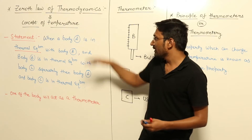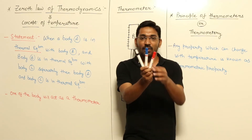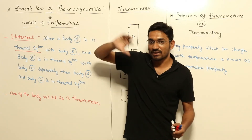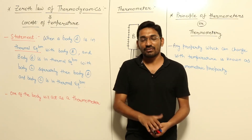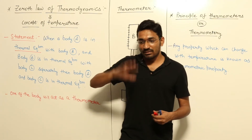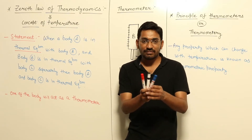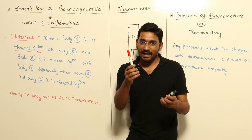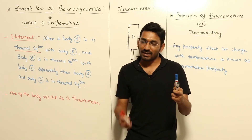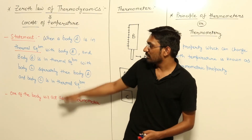With the help of the Zeroth Law of thermodynamics, we are able to determine that out of these three bodies, one body will act as a thermometer. That's why the Zeroth Law of thermodynamics is used to make thermometers - the concept of how a thermometer works comes from this law. A thermometer works on the Zeroth Law of thermodynamics. So if body A and body B are in thermal equilibrium, and body B and body C are in thermal equilibrium separately, then we can directly say that these two bodies must also be in thermal equilibrium.